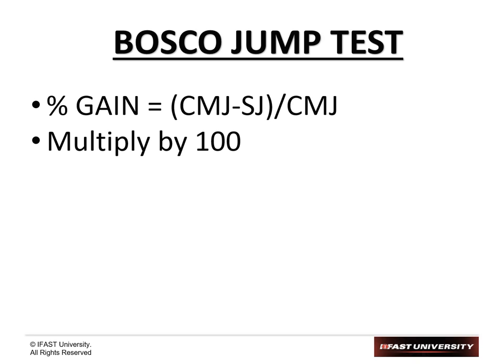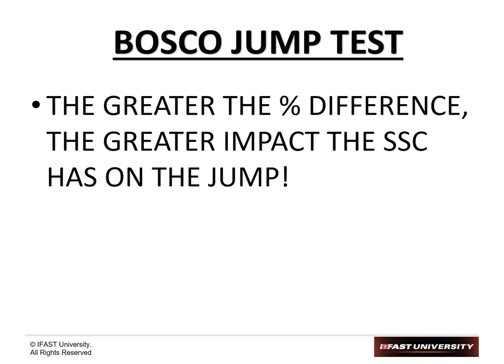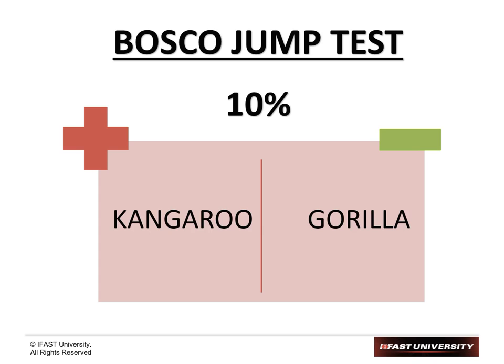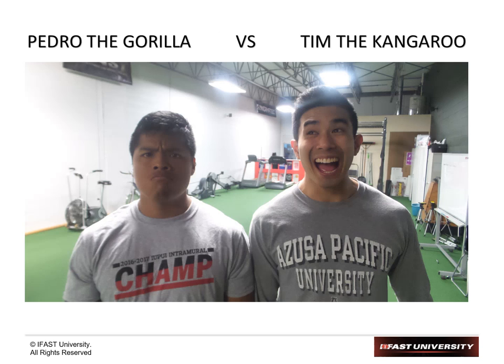A more elastic athlete — a kangaroo — will have a higher percentage gain from the stretch shortening cycle because they rely on that elasticity. A gorilla has more of a muscular effort, so the static jump and counter movement jump shouldn't be that different. From testing, we've found the 10% mark is the dividing line: greater than 10% gain means you have a kangaroo; less than 10% gain means you have a gorilla. It's a good starting point for categorizing athletes.